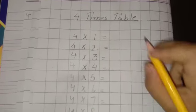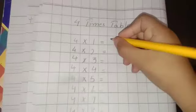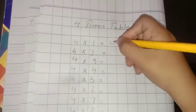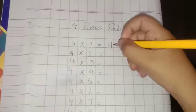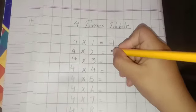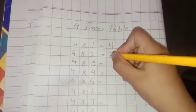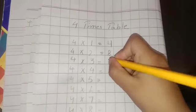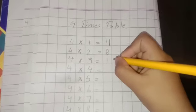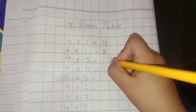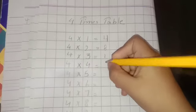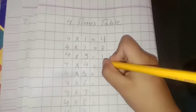4 1s are 4, 4 2s are 8, 4 3s are 12, 4 4s are 16.